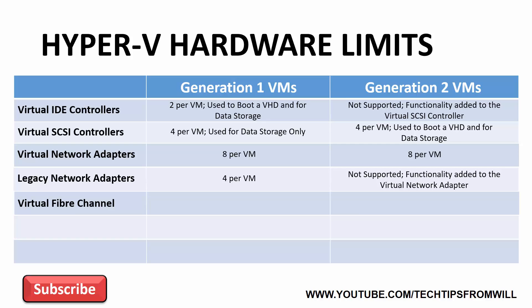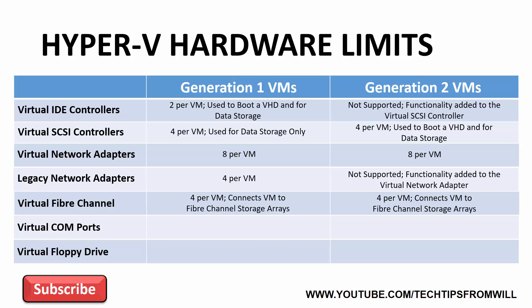Next we have the virtual fiber channel adapters. Virtual fiber channel adapters are supported by both Generation 1 and Generation 2 virtual machines, of which a maximum of four can be added. Virtual fiber channel adapters are required to connect your virtual machines directly to fiber channel storage arrays. The last pieces of virtual hardware I will look at are for Generation 1 virtual machines only: virtual COM ports and the virtual floppy drive. These do not apply to Generation 2 virtual machines. Generation 1 virtual machines support two COM ports and one virtual floppy drive, and neither of these can be removed. Microsoft decided to drop support for them entirely in their Generation 2 virtual machines.